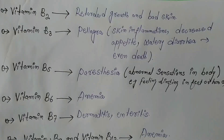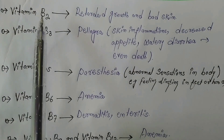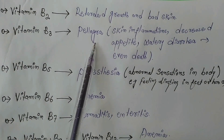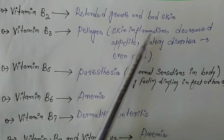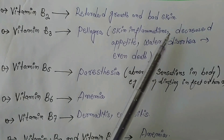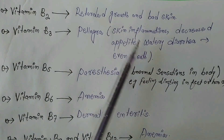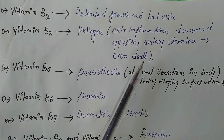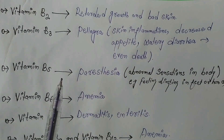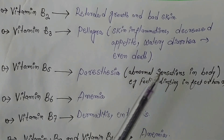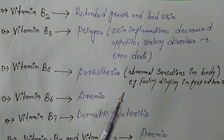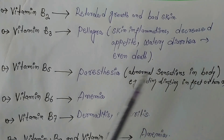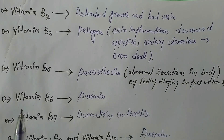Vitamin B2 deficiency causes retarded growth. Vitamin B3 deficiency causes pellagra, which includes inflammation of the skin, decreased appetite — meaning the person becomes weak — watery diarrhea, and it may even lead to death. Vitamin B5 deficiency causes paresthesia, meaning abnormal sensations in the body, such as a tickling feeling in the feet or hands.